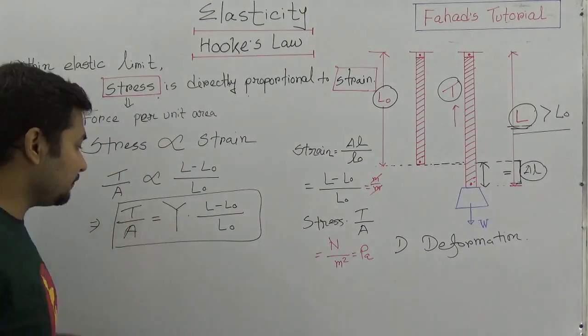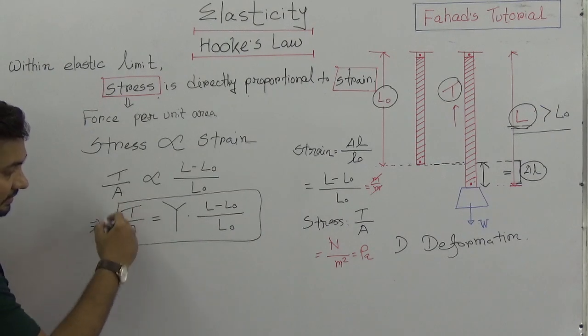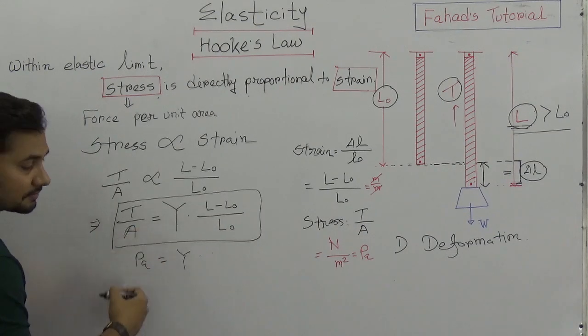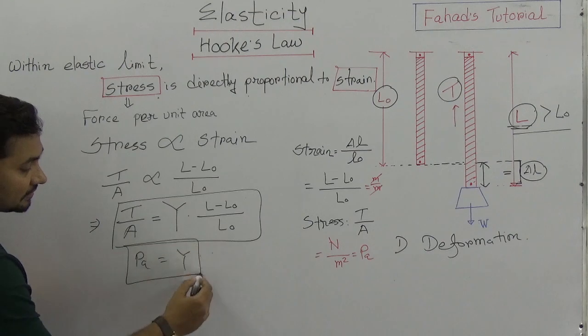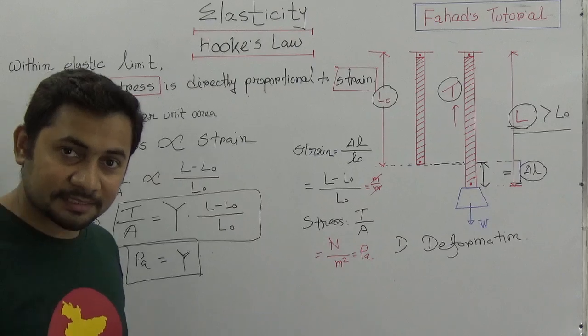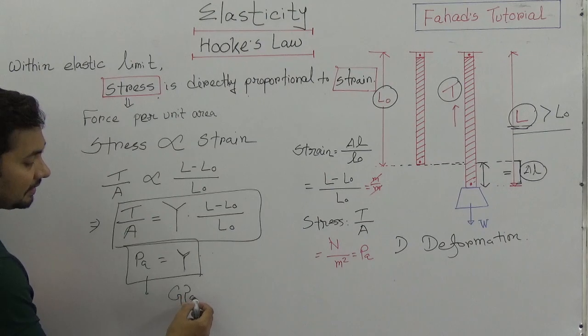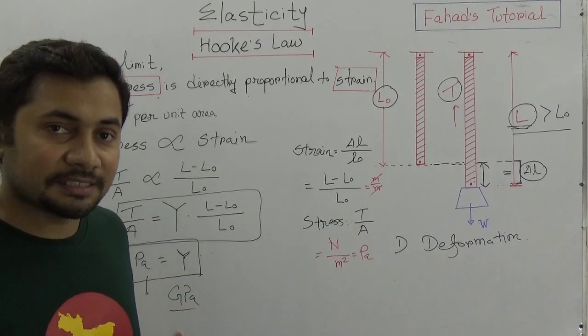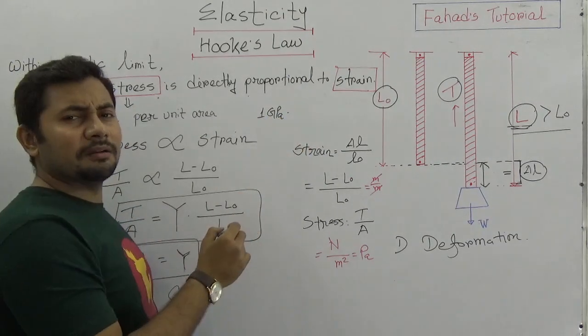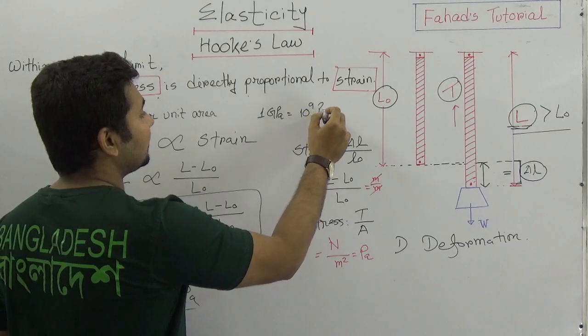So that is why, if I need to find out Y, then what will be the scenario? Suppose this is actually the Pascal, and this is Y, and this is nothing. So we got it that the unit of the Young modulus is actually Pascal. And sometimes it has been expressed in your book like GPA, this is actually the Giga Pascal. So 1 Giga Pascal is 1 billion Pascal. I mean 10 to the power 9 Pascal.